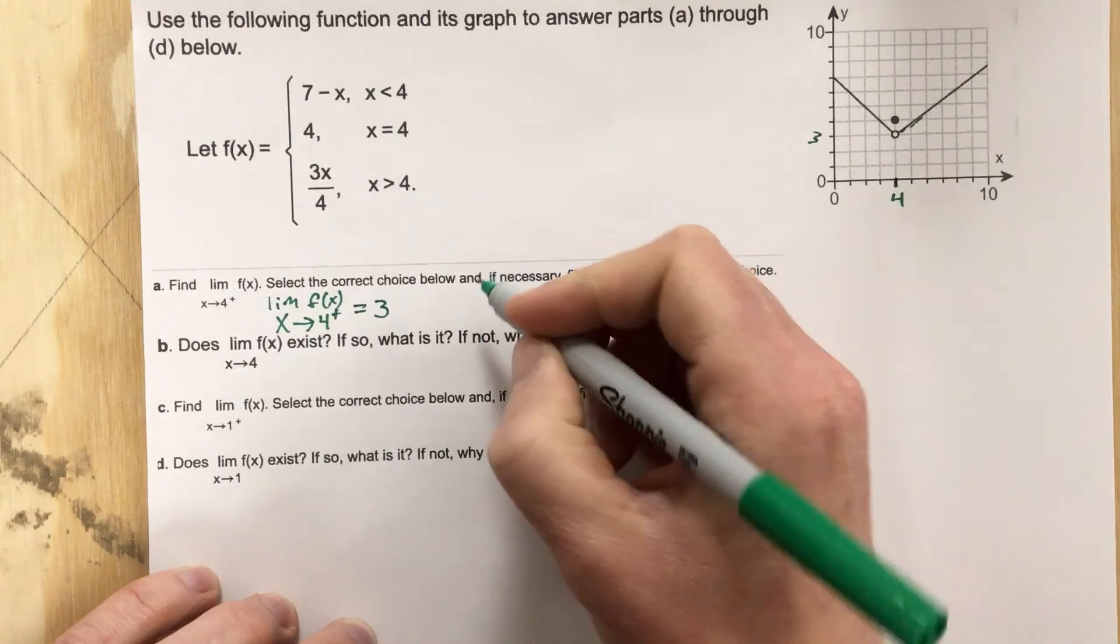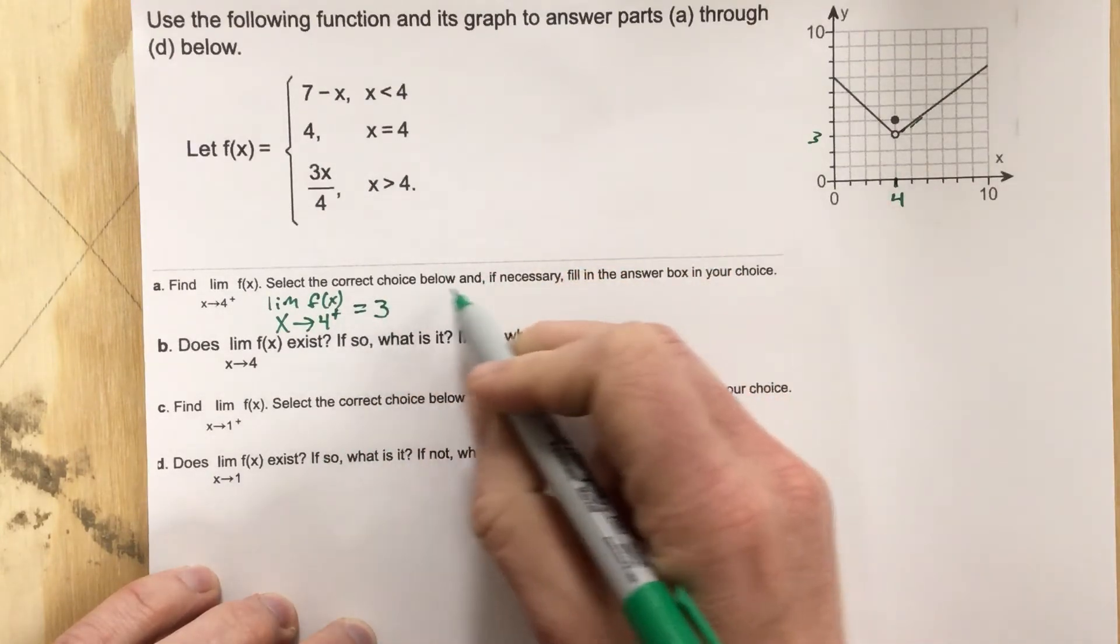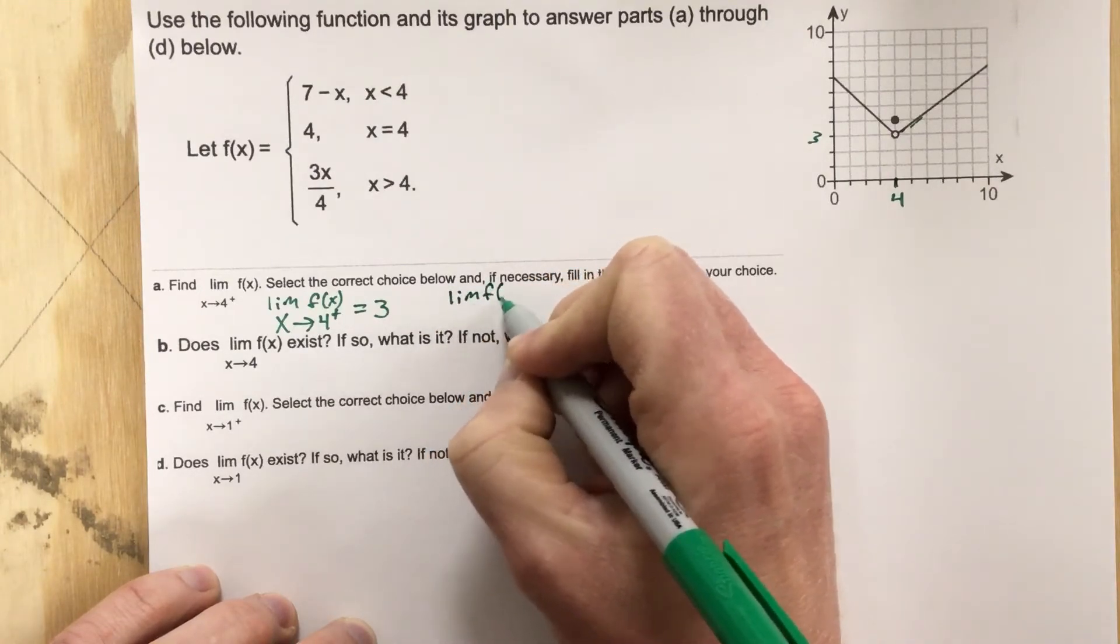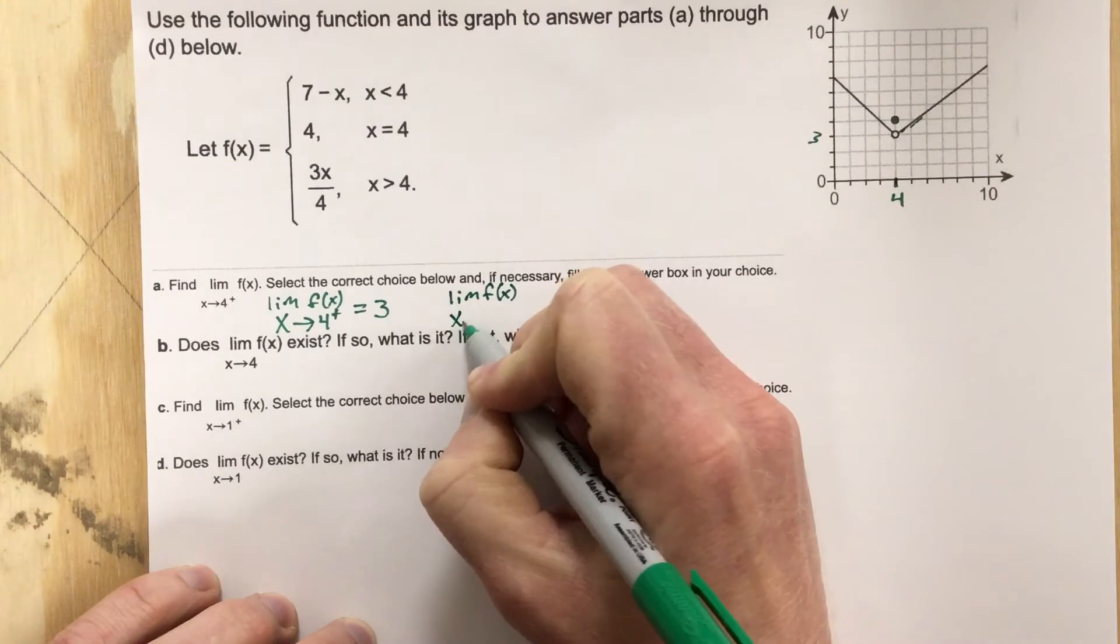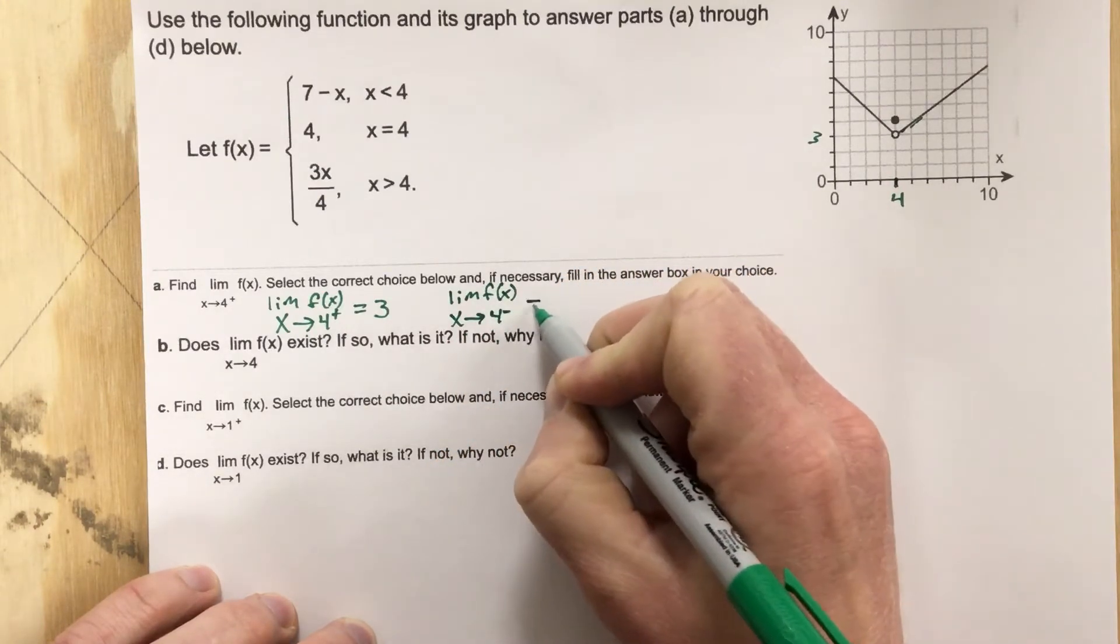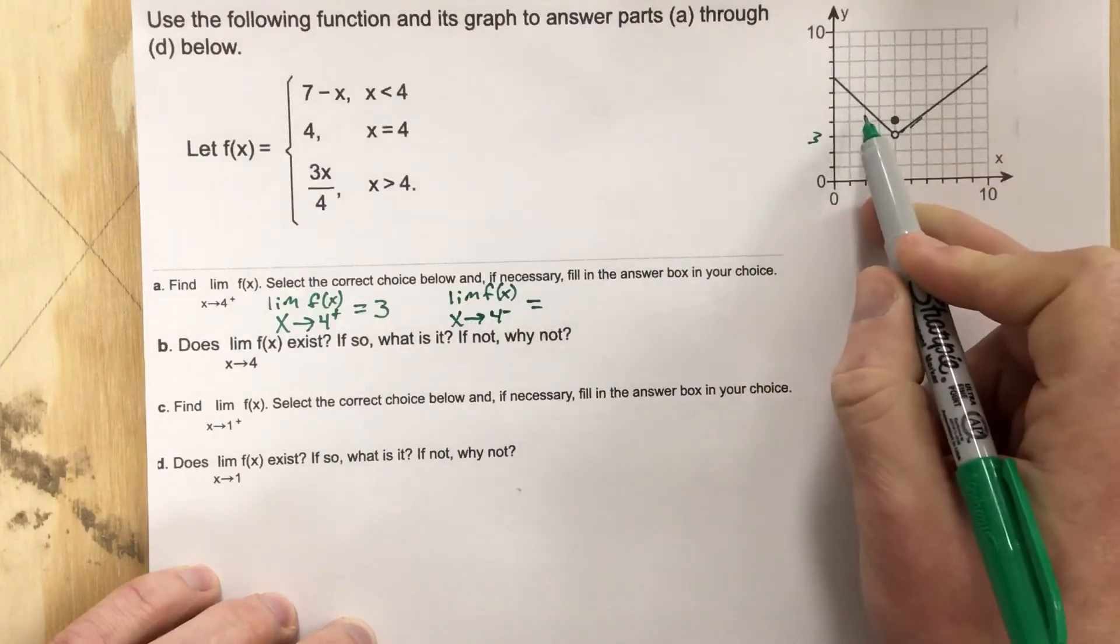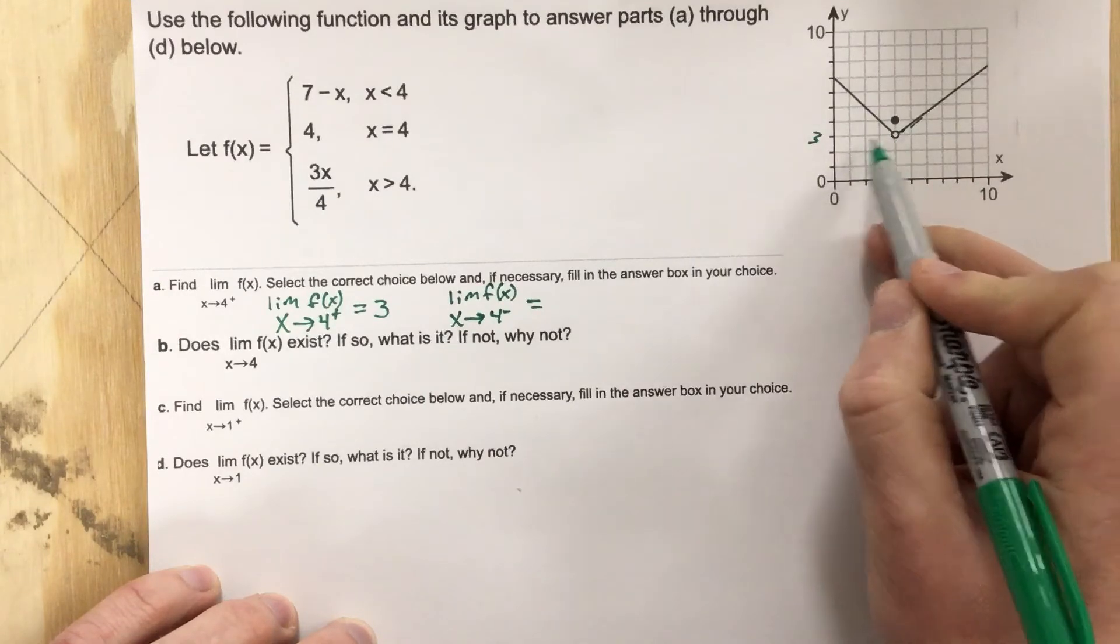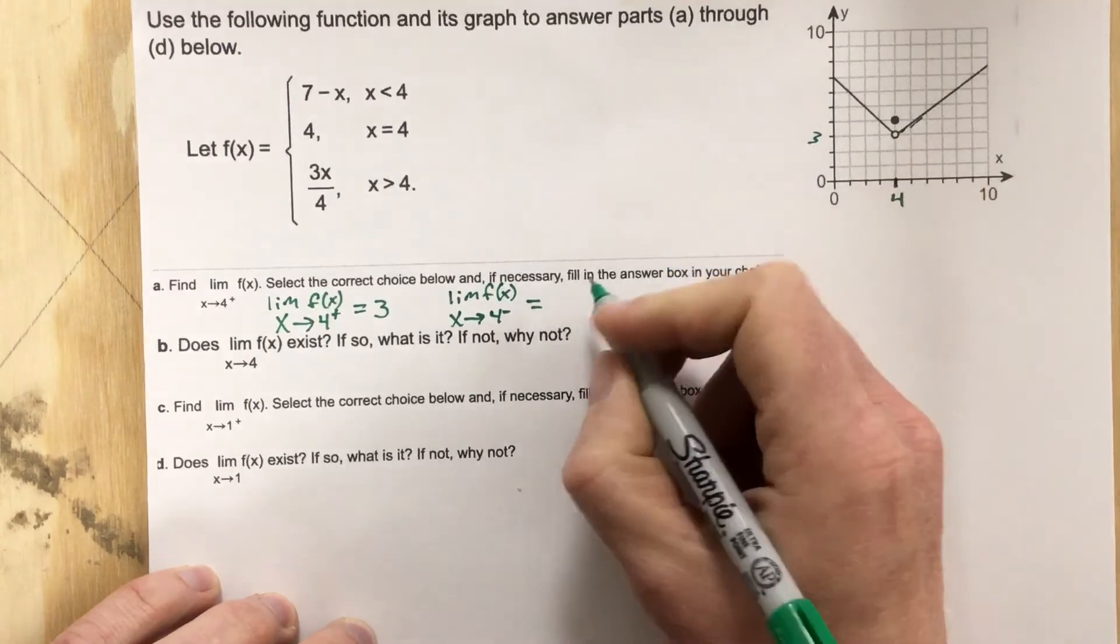The second part of this part a, although it's not written here, is limit of f(x) as x approaches 4 from the left. Well as I approach 4 from the left, I also get 3 for the limit. It's approaching the y value of 3 there.